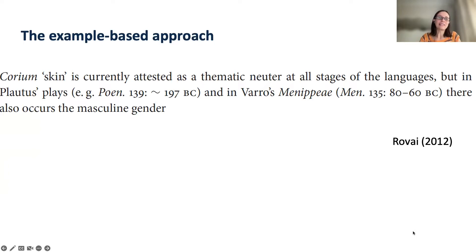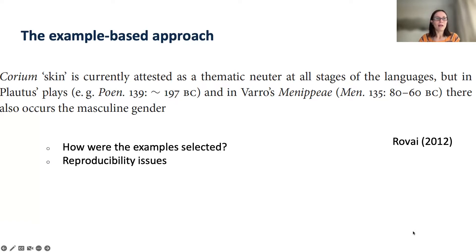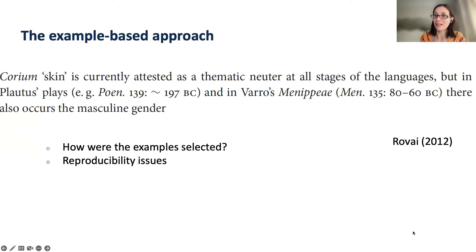I call this the example-based approach, because I could see examples being used to illustrate a phenomenon and show evidence of a more general pattern. But what I was missing is the quantification aspect. Questions like: how were the examples selected? What made them worth mentioning? How can this be reproduced? What would other people looking at this phenomenon conclude?